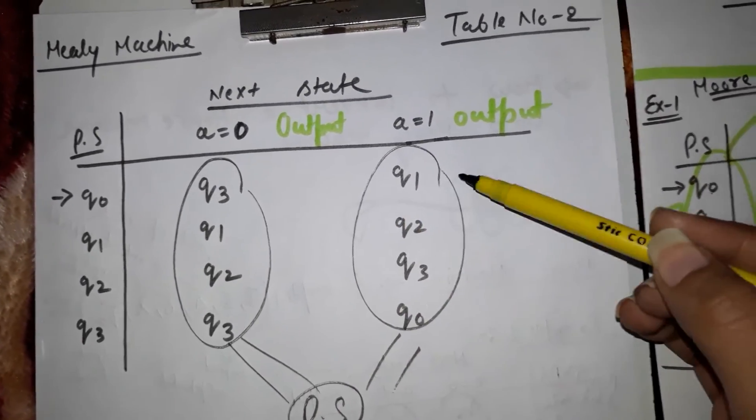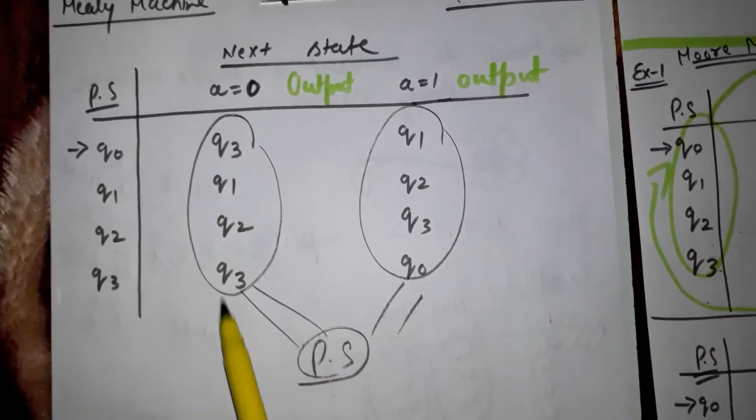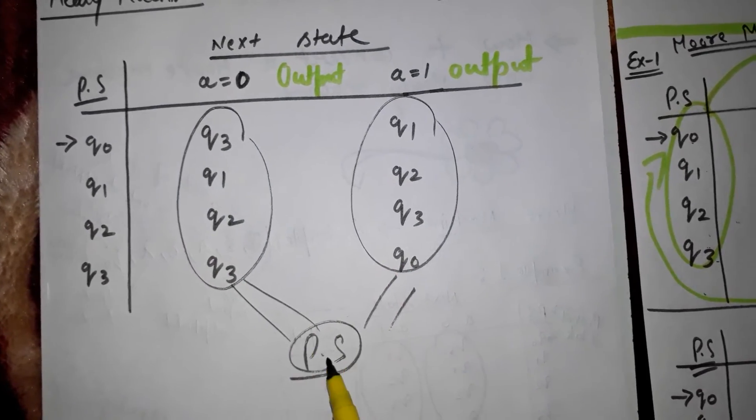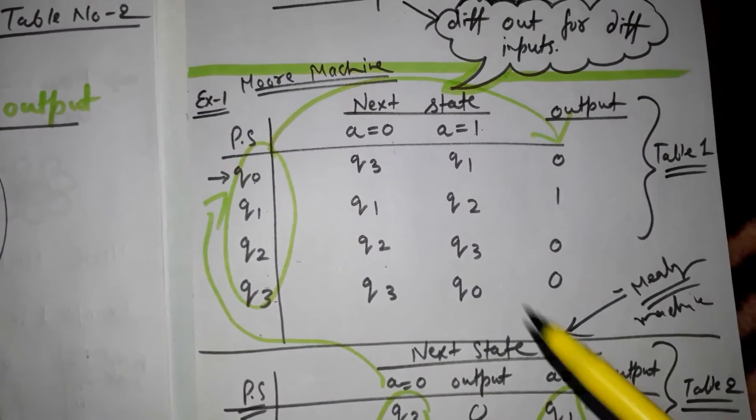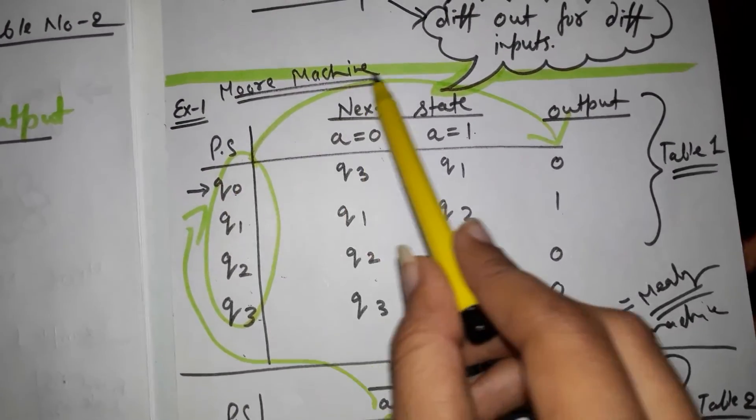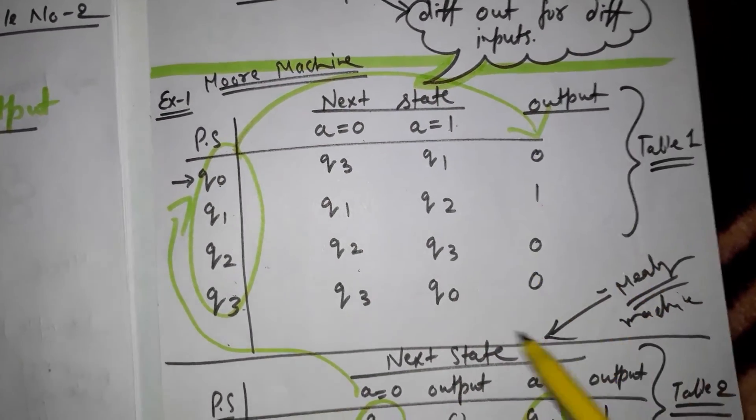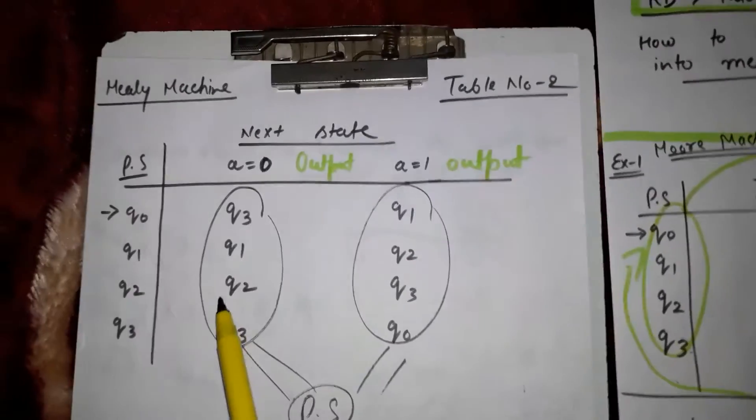Go back to table one and see their corresponding output, then mention their output here in the new table.